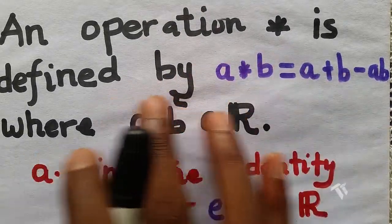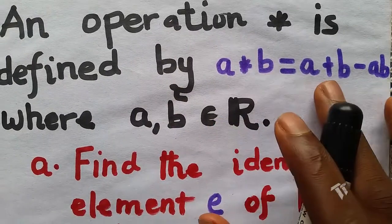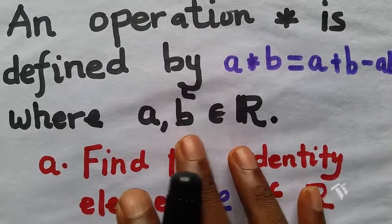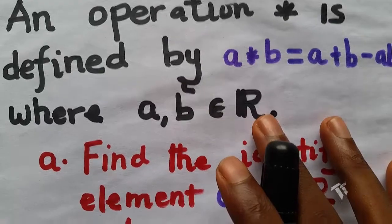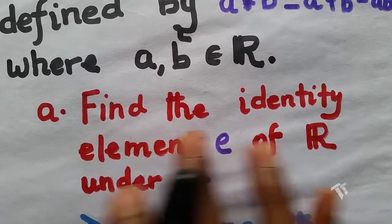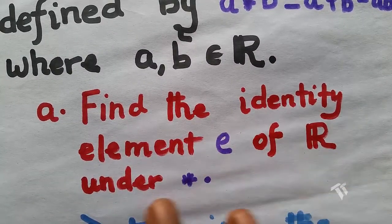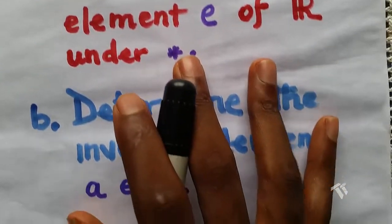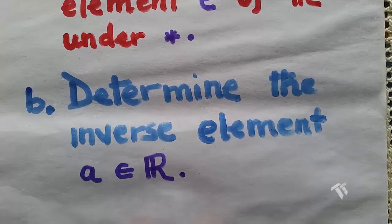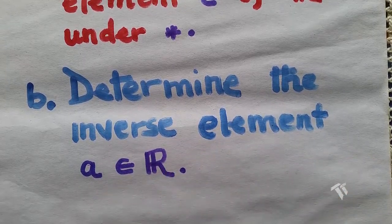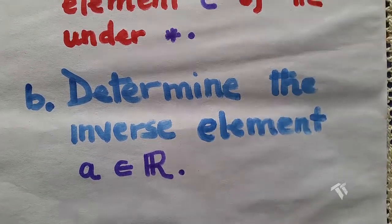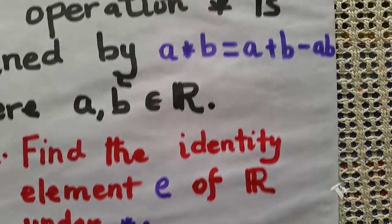An operation star is defined by a★b = a + b − ab, where a and b are all from R. We are supposed to find the identity element e of R under the operation star, and we are supposed to determine the inverse element of a from R.